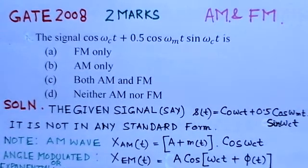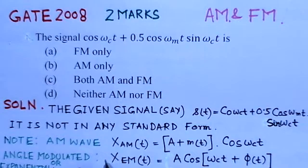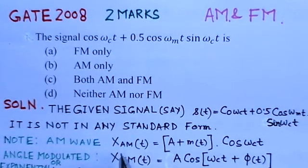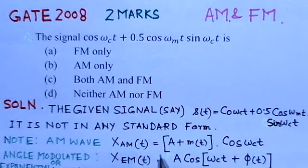We know the standard form of the waves. Just to get an idea, AM wave x_AM(t) is given by [A + m(t)]·cos(ω_c·t).